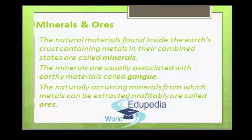In the combined state, metals occur in more than one form — for example, carbonates, oxides, sulfides, halides, phosphates and silicates. Silicates are not worked for extraction of metals due to the difficulties involved. The required minimum concentration of metal in an ore varies from metal to metal — for aluminium and iron it can be 30% or more, but for copper it can be only 1% or even less.